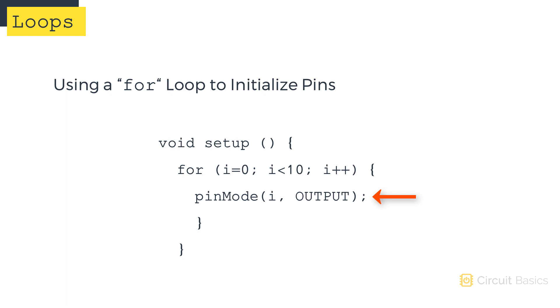In the pin mode function, the first parameter would usually be the pin number we want to initialize. But we can use the i variable instead. The first time through the loop, i is equal to zero, so digital pin zero will be set as an output.